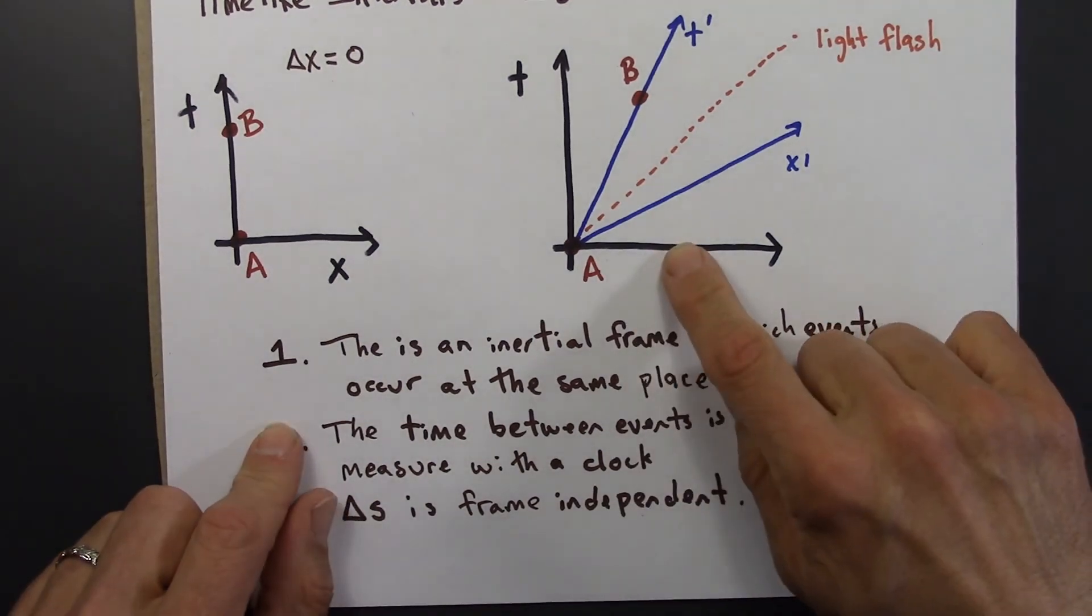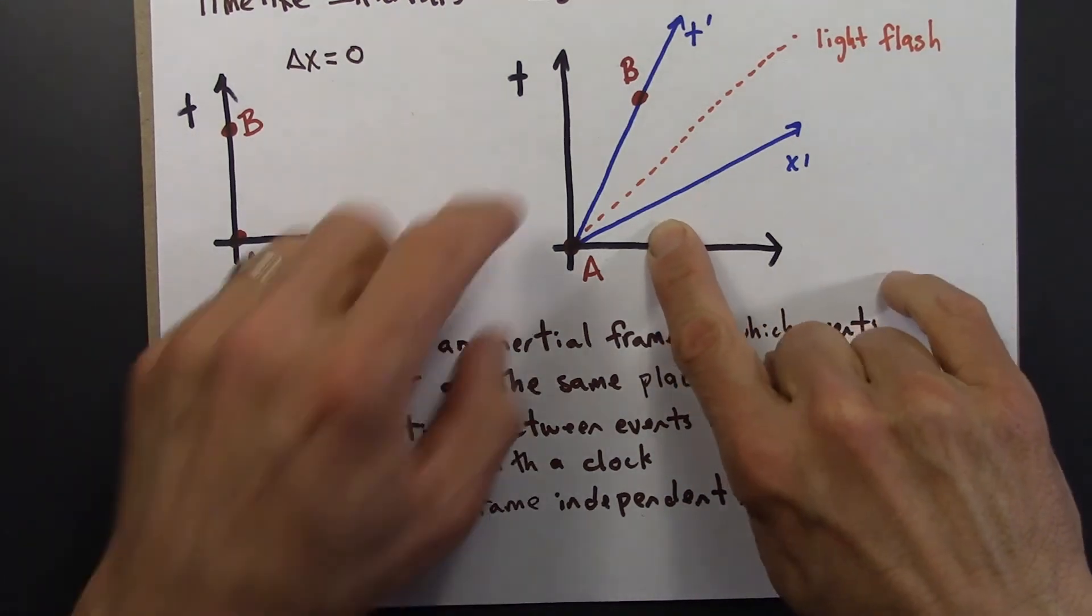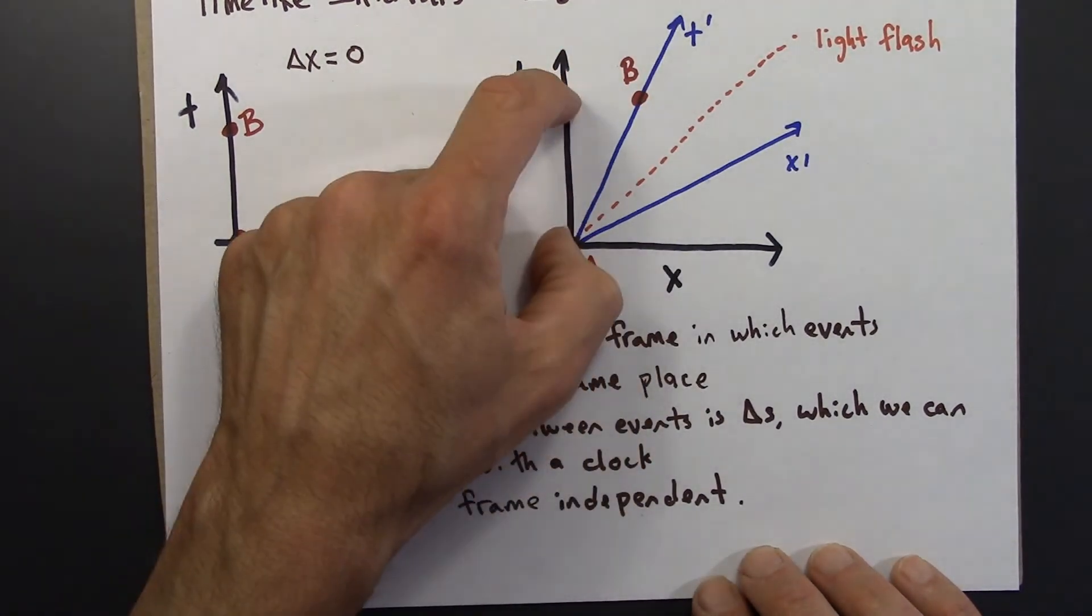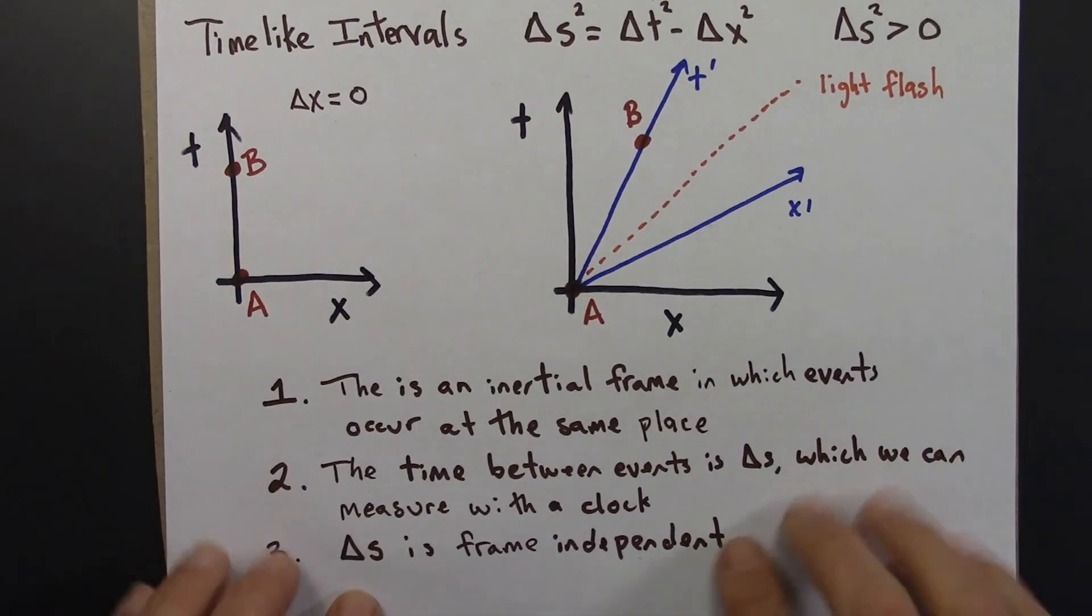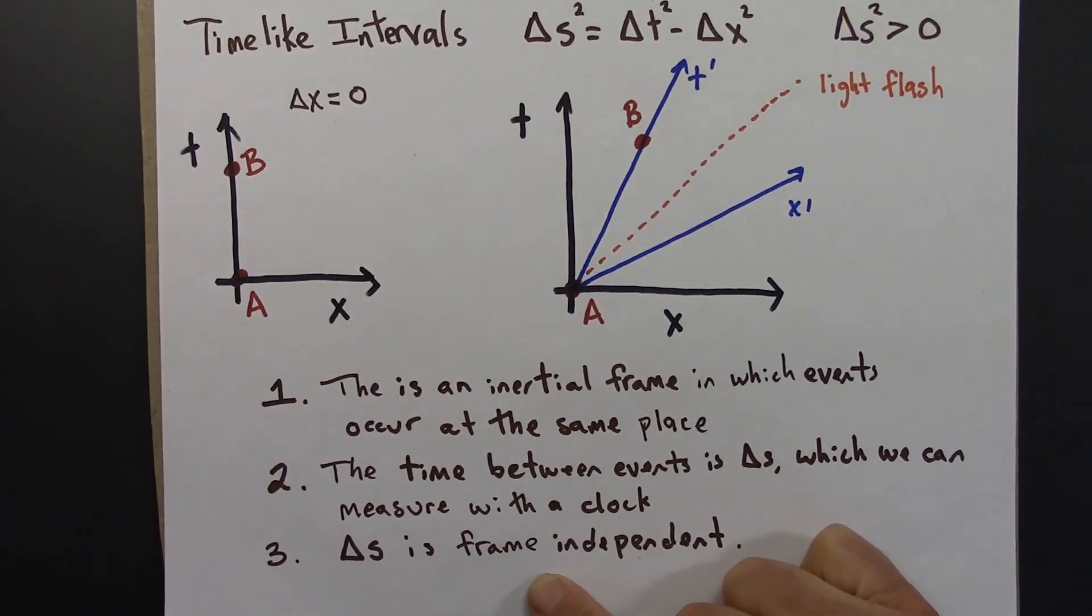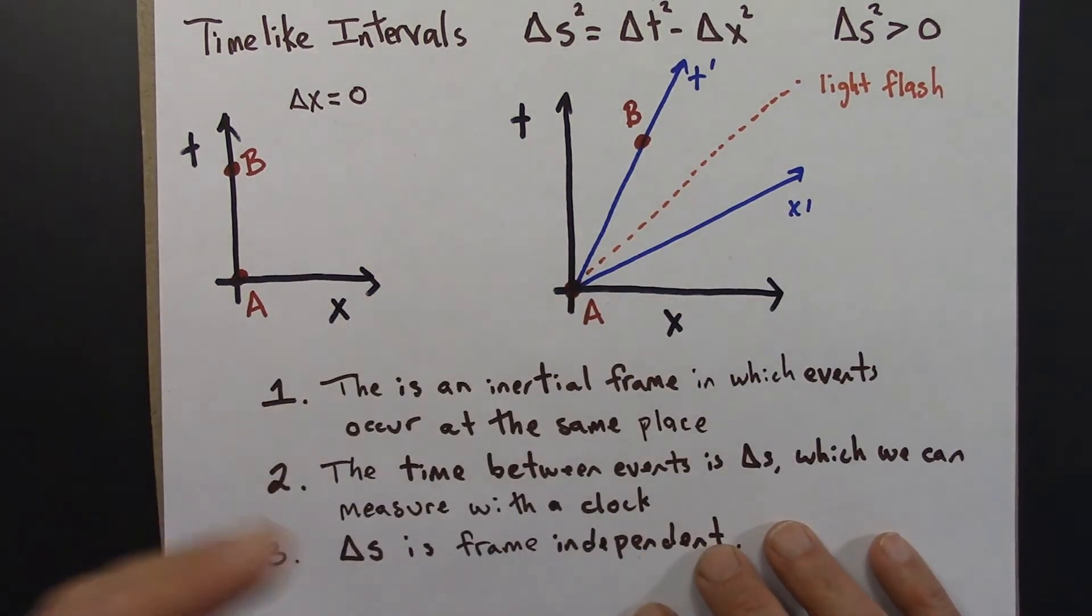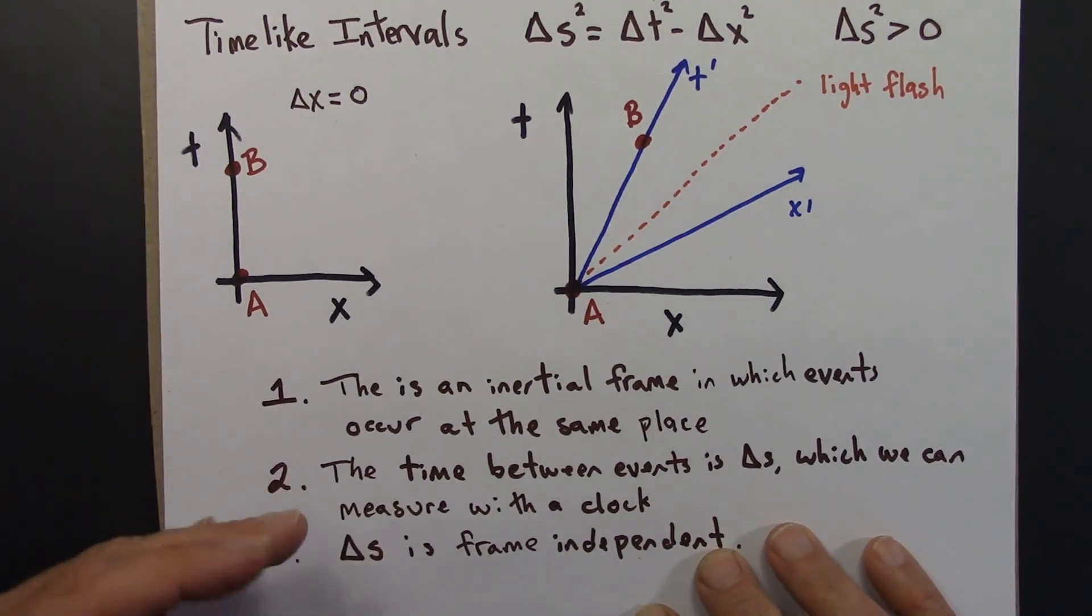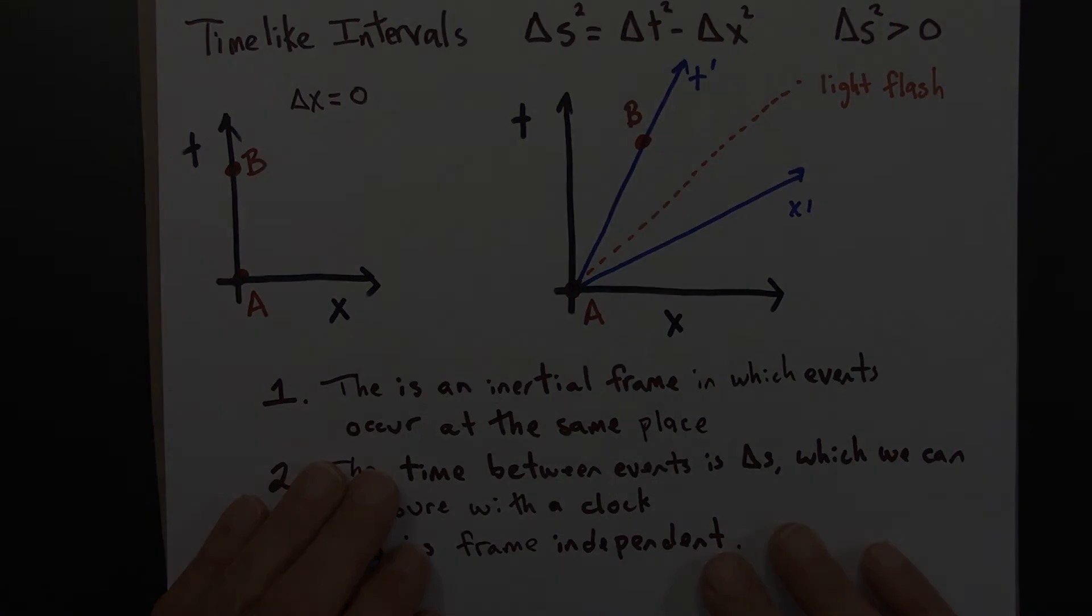A reminder that delta s is frame-independent. In another frame, like the unprimed frame here, delta x is not necessarily zero. But nevertheless, if you calculate delta s squared using the delta x and delta t in the metric equation, you'll get the same result in any reference frame. This is a quick summary of time-like intervals. I hope this is familiar, because we've talked about a lot of this before. In the next video, we'll talk about space-like intervals. That'll be new material, because we haven't really encountered space-like intervals and used the metric equation on space-like intervals before.